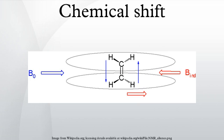In nuclear magnetic resonance spectroscopy, the chemical shift is the resonant frequency of a nucleus relative to a standard in a magnetic field.